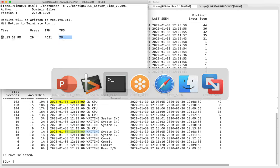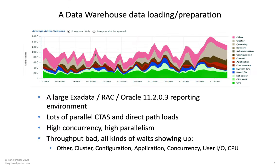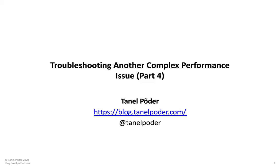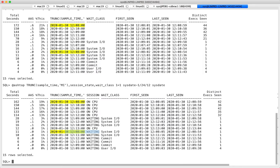What I'm telling you is that these nice charts you see in GUI tools are just ASH data grouped by minute — or maybe every 10 seconds depending on the tool — with colors representing wait classes from a GROUP BY. You can use ASH data like that to slice and dice things.